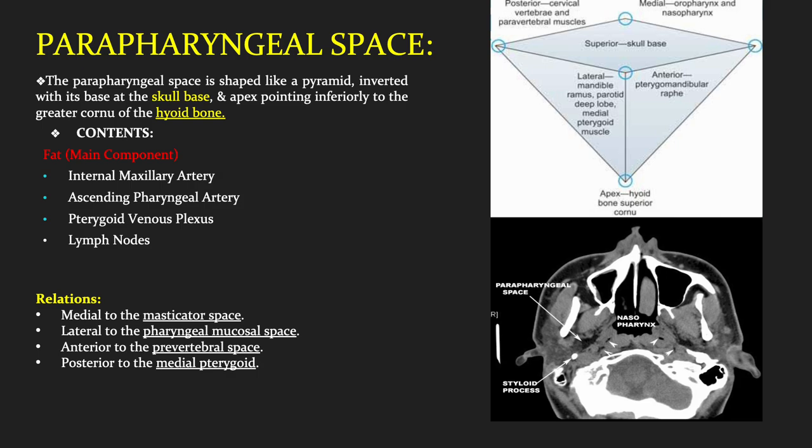Next we have the parapharyngeal space. It is shaped like an inverted pyramid with its base at the skull base and apex pointing inferiorly to the greater cornu of the hyoid bone. It contains fat as its main content, along with the internal maxillary artery, ascending pharyngeal artery, pterygoid venous plexus and lymph nodes. It is located medial to the masticator space, lateral to the pharyngeal mucosal space, anterior to the prevertebral space and posterior to the medial pterygoid muscle.